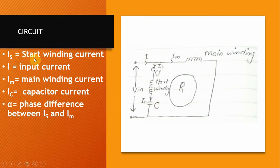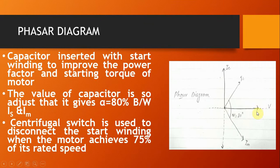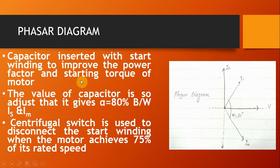IS is the starter winding current, I is the input current, and IC is the capacitor current. Alpha is the phase difference between IS and IM. As you can see in the phasor diagram of the capacitor start motor, the alpha between IS and IM is 80 degrees. The capacitor is inserted with the starter winding to improve the power factor and increase the starting torque of the motor. The capacitor value is adjusted so that the phase difference alpha between IS and IM is 80 degrees.